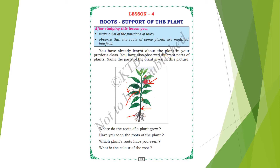Where do the roots of the plant grow? They grow at the bottom of the land, in the soil. Have you seen the roots of a plant? If you have, tell me in the comments which plant's roots you have seen. I have seen the tulsi plant's root. The color of the root is brown.